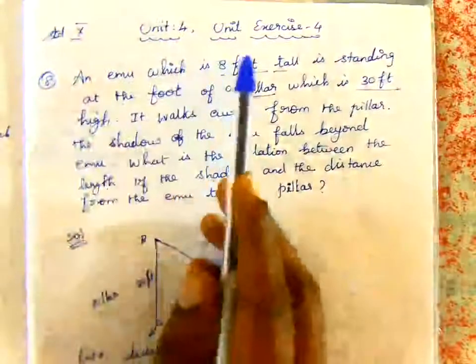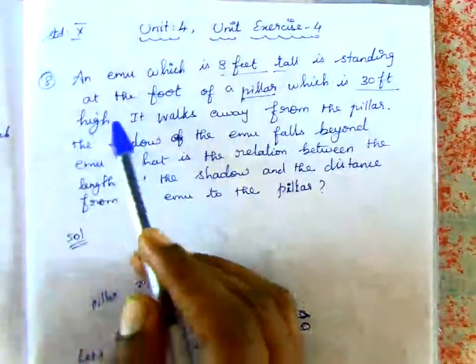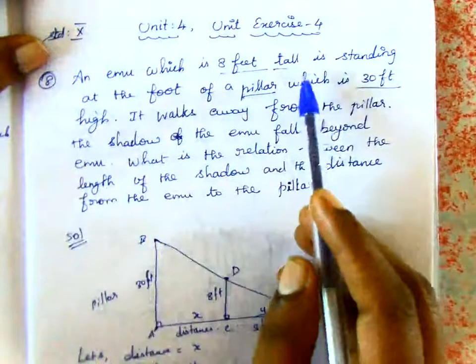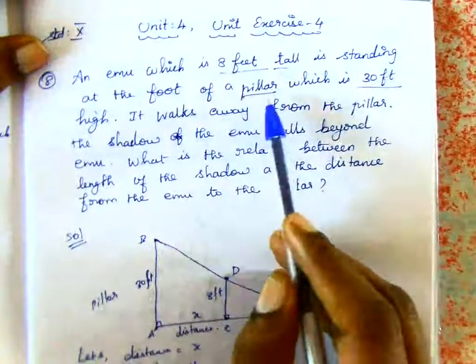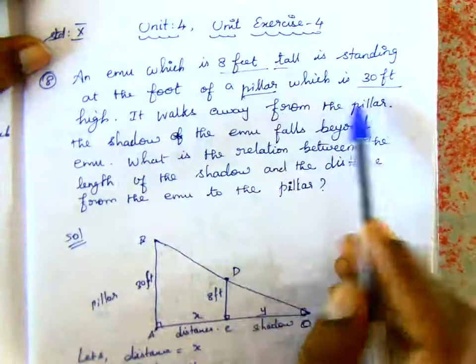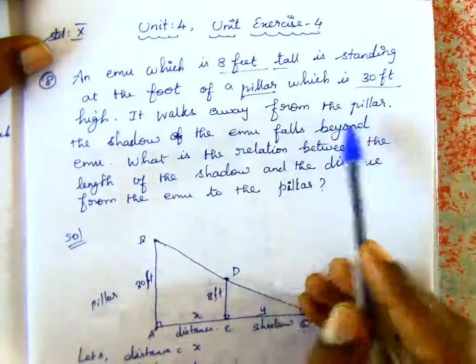Standard 10, Unit 4, Unit Exercise 4, Question No. 8. An emu which is 8 feet tall is standing at the foot of a pillar which is 30 feet in height. It walks away from the pillar.